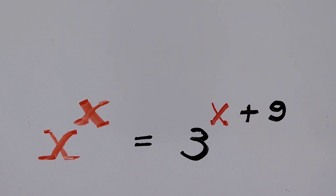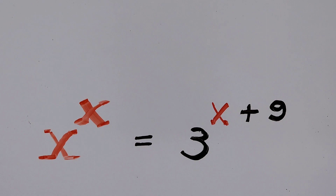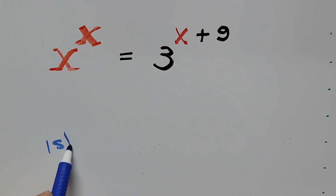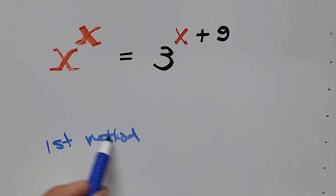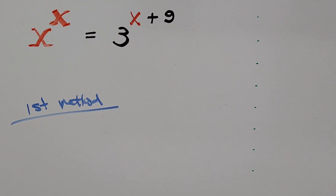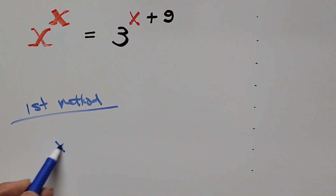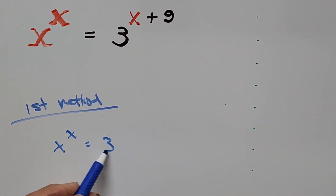Now let's start solving. I'll be presenting two methods to solve for the value of x. The first method will use the laws of exponents, and the second method will use the laws of logarithm. So let's start on the first method. We have the equation again: x to the power of x equals 3 to the power of x plus 9.